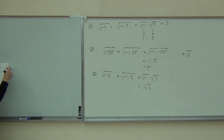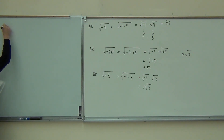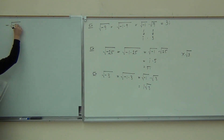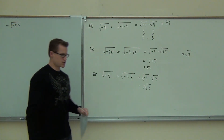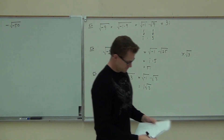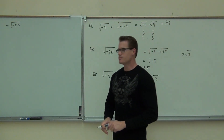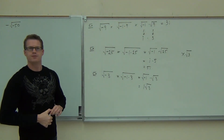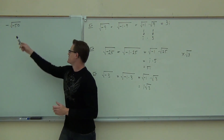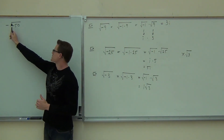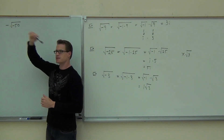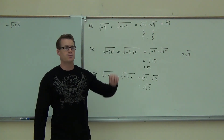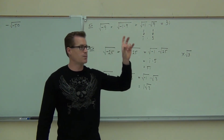Let's try negative square root of negative 50. First question: does a negative times a negative equal a positive in this case? No — that would be like multiplying a whole number inside.